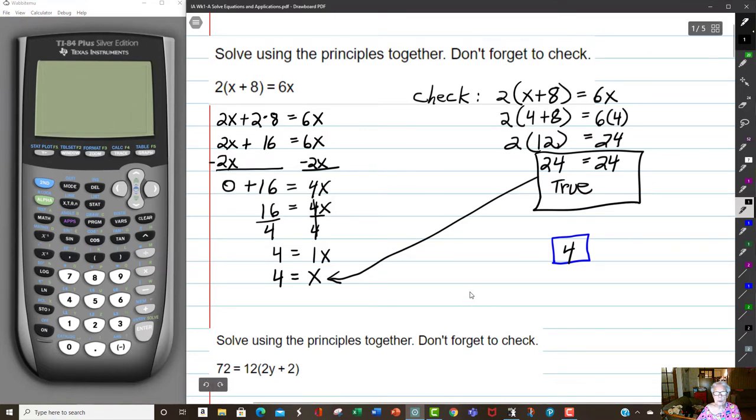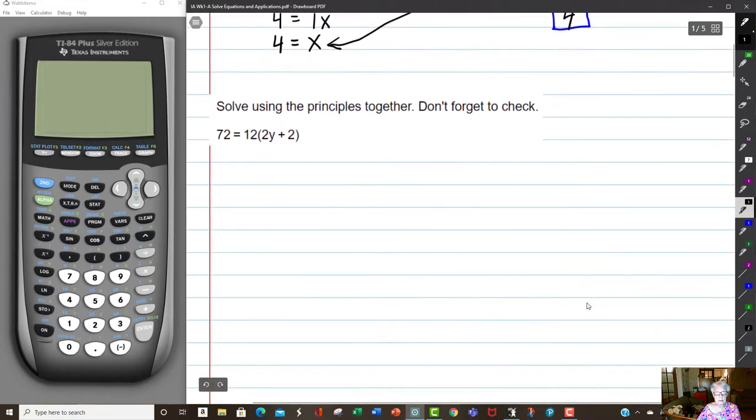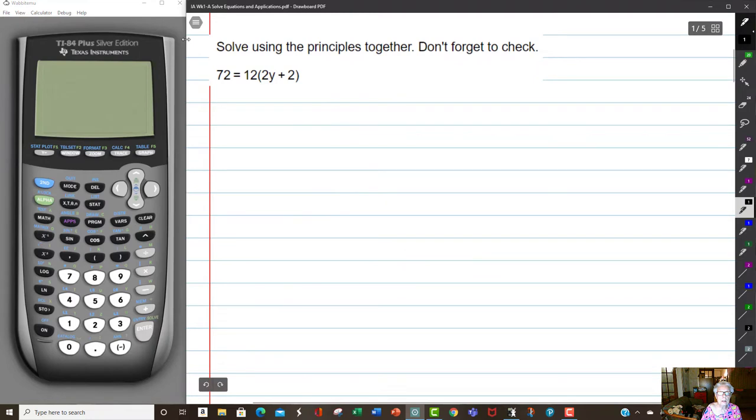Before going on to the next one, notice it has parentheses on the other side of the equal sign. 72 equals 12 times 2y plus 2. 72 equals 12 times 2 times y. 12 times 2 is 24. So this is 24y plus 12 times 2 is 24.